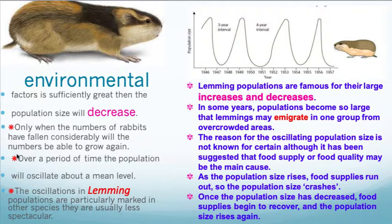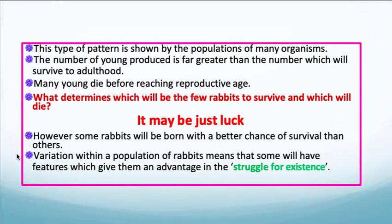The oscillations in lemming populations are particularly marked. Lemming populations are famous for their large increases and decreases — in some years, populations become so large that lemmings may emigrate in one group from overcrowded areas. The reason for the oscillating population size is not known for certain, but it's been suggested that food supply or food quality may be the main cause. As the population rises, food supplies eventually run out, so the population crashes. Once the population size decreases, food supplies begin to recover and the population does as well.